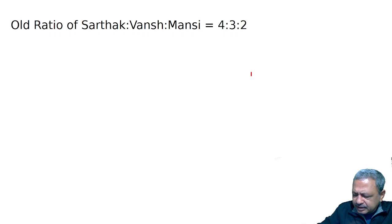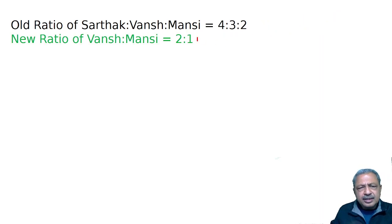Question A: Sartag, Bans, Mansi were partners sharing profits in the ratio of 4:3:2. Sartag retires. Bans and Mansi will share future profits in the ratio of 2:1. So, new ratio.